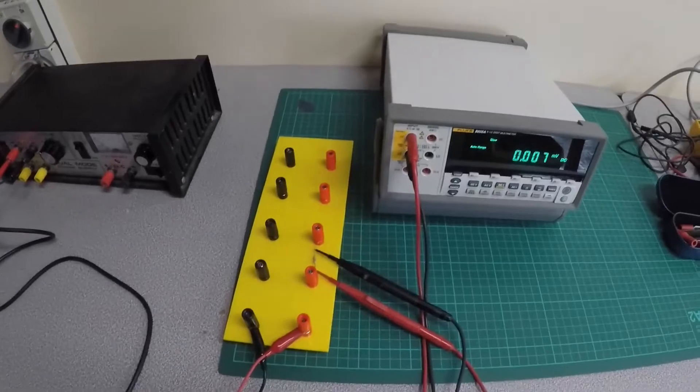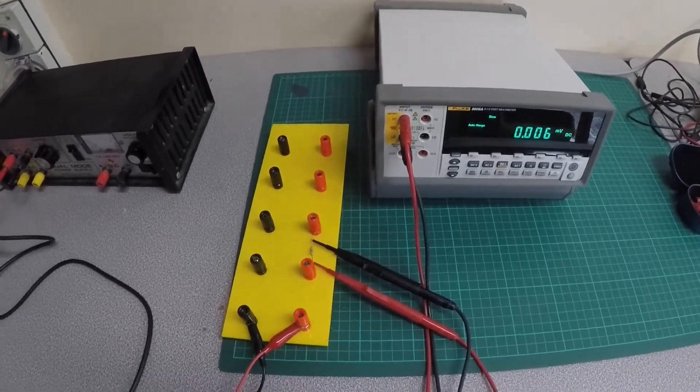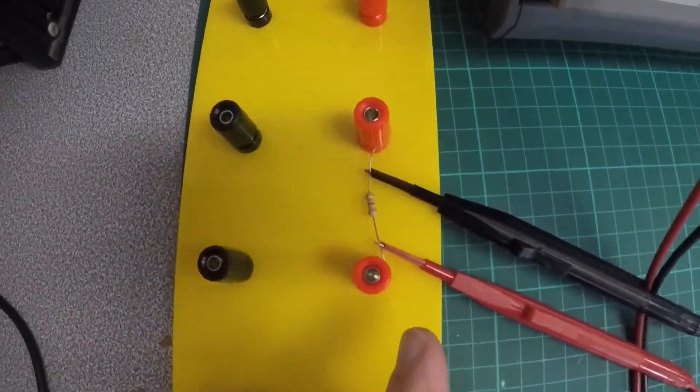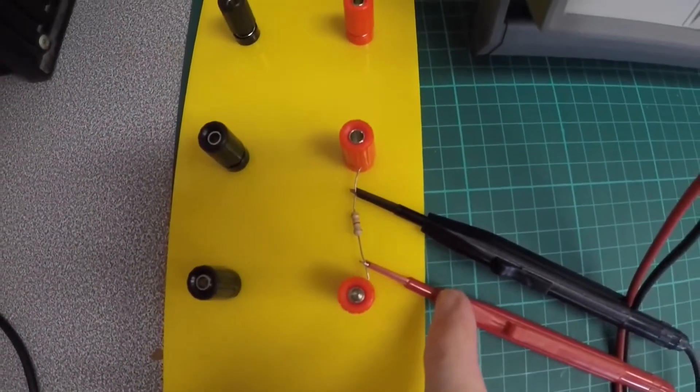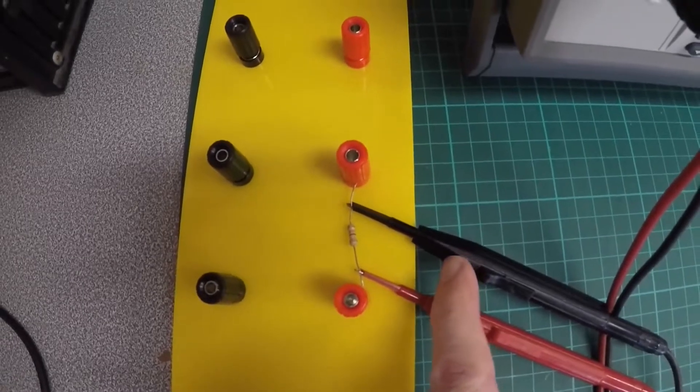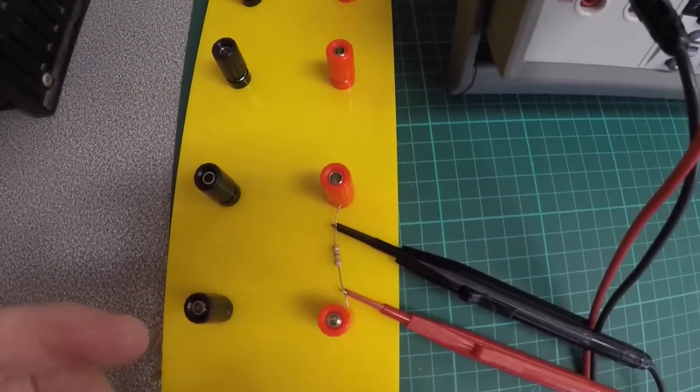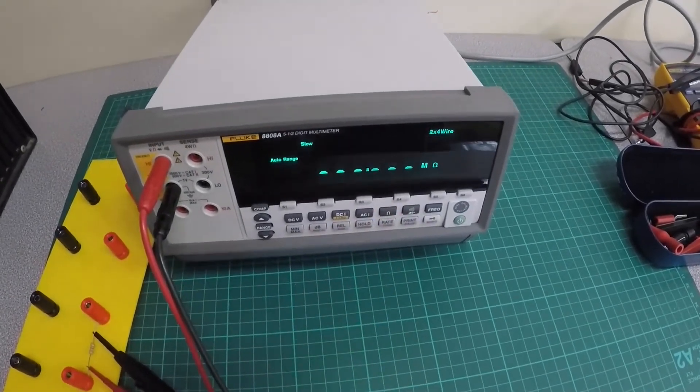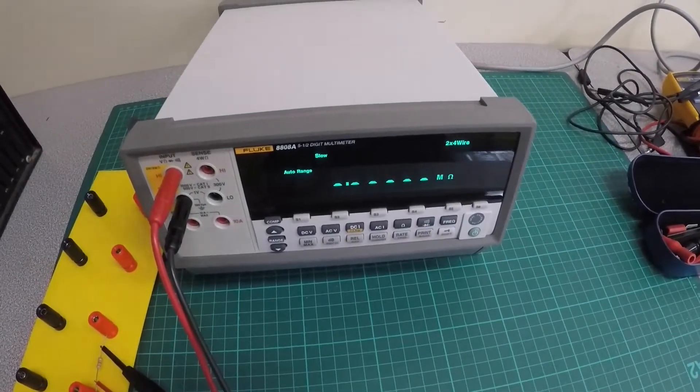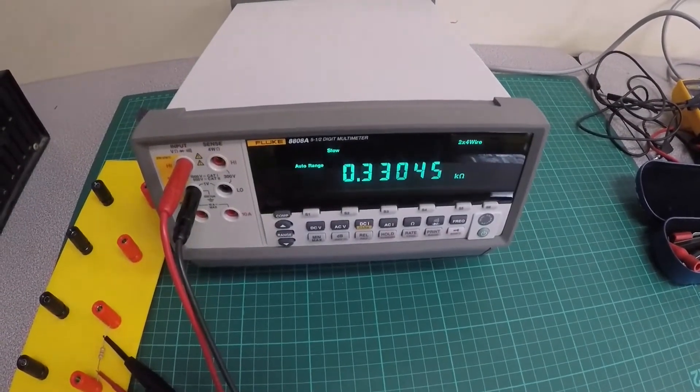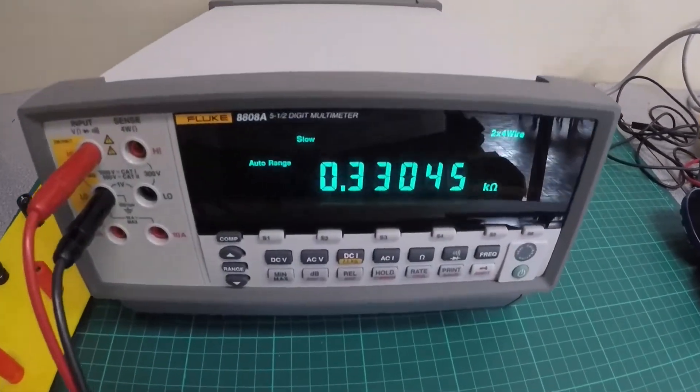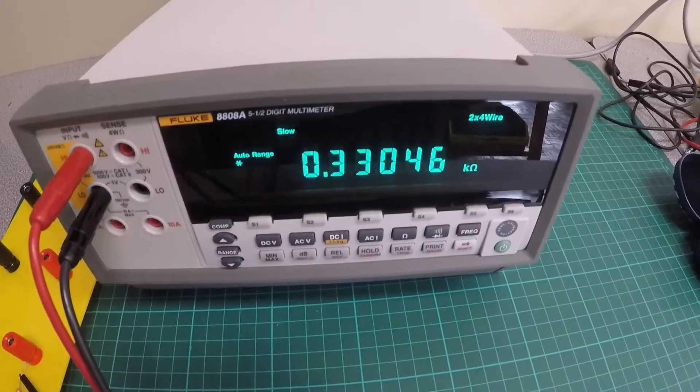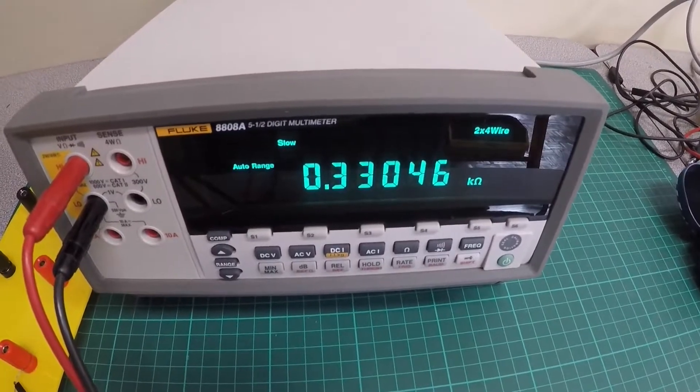Let's measure the resistance across the load. So what we have to do is put our meter in parallel. So we have our positive and negative leads across the resistor. Then what we have to do is select ohms. And that is 0.330 ohms, or 330 ohms.